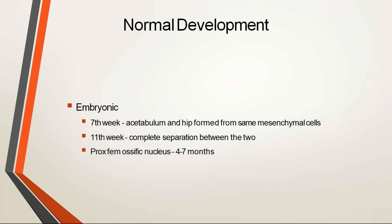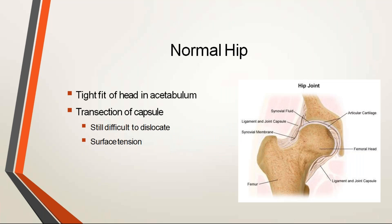Coming to the normal development of the hip: in the 7th week, the acetabulum and hip form from the same mesenchymal cells. In the 11th week, there is separation between the two — that is, the acetabulum and femoral head differentiate. Proximal ossification completes by 4 to 7 months. In the normal hip, the femoral head is well located into the acetabulum cup — this is known as a tight fit of the head into the acetabulum.